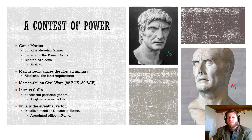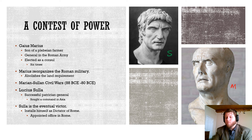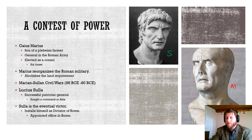Marius recognizes the power of the Roman military. He gets rid of the land requirement for soldiers and basically offers all these jobless farmers a place to sleep and a paycheck. He inflates the ranks of his army — and those soldiers become loyal to him personally, not to the Republic. Sulla, who had wanted a command in Asia and been denied, is going to be in this war with Marius and eventually become the victor, installing himself as dictator in Rome.